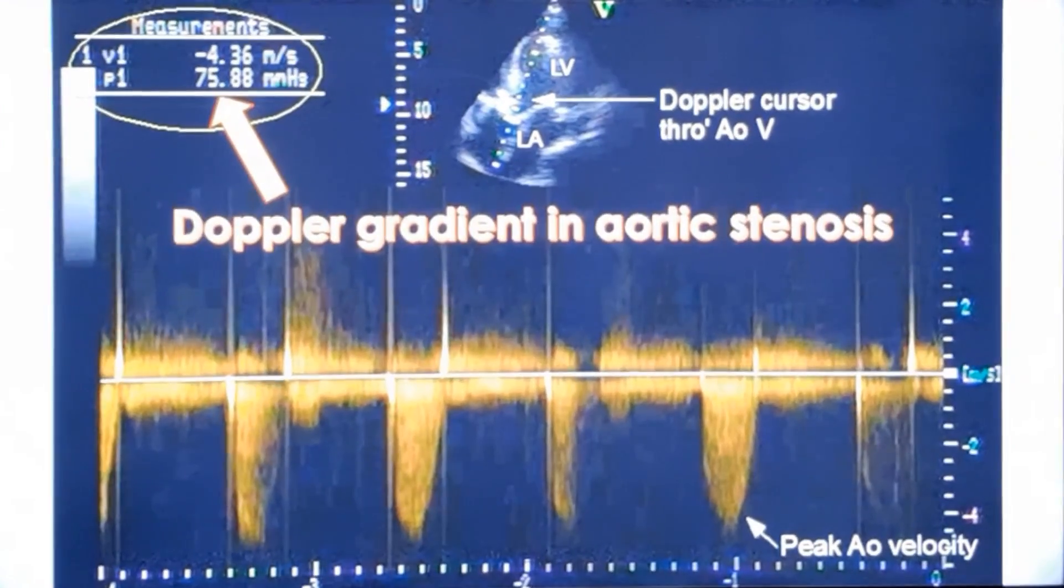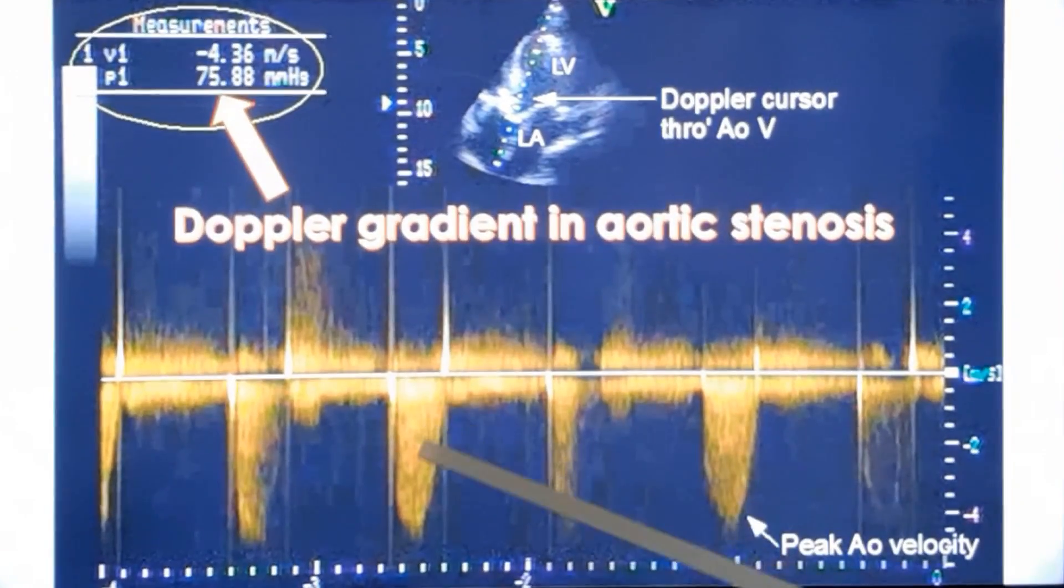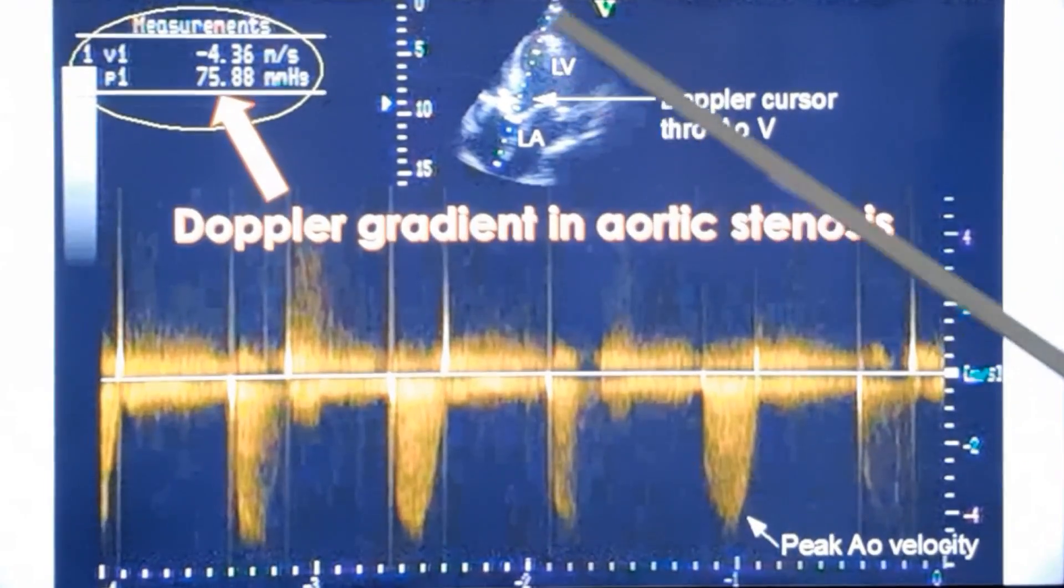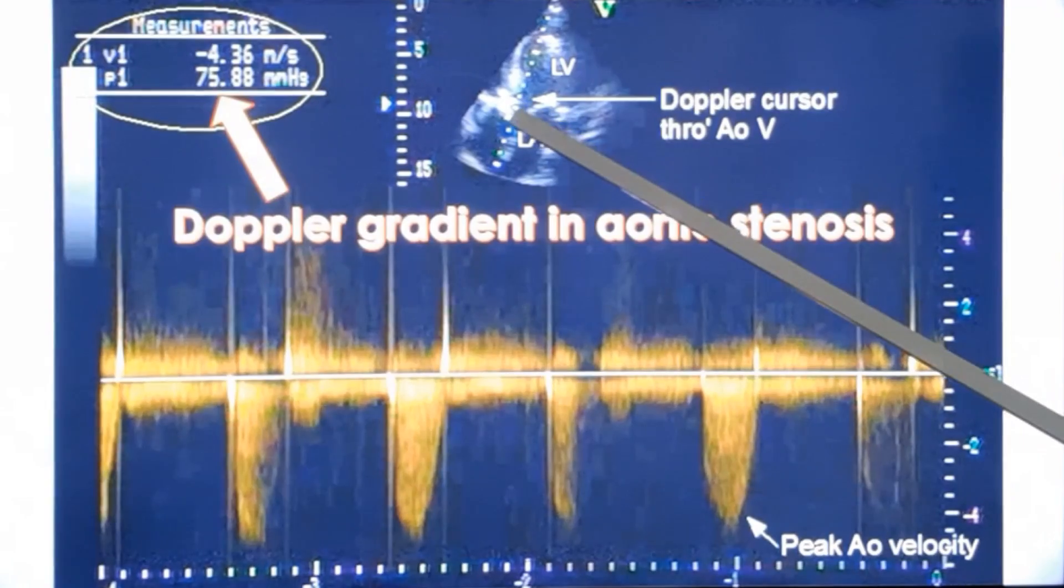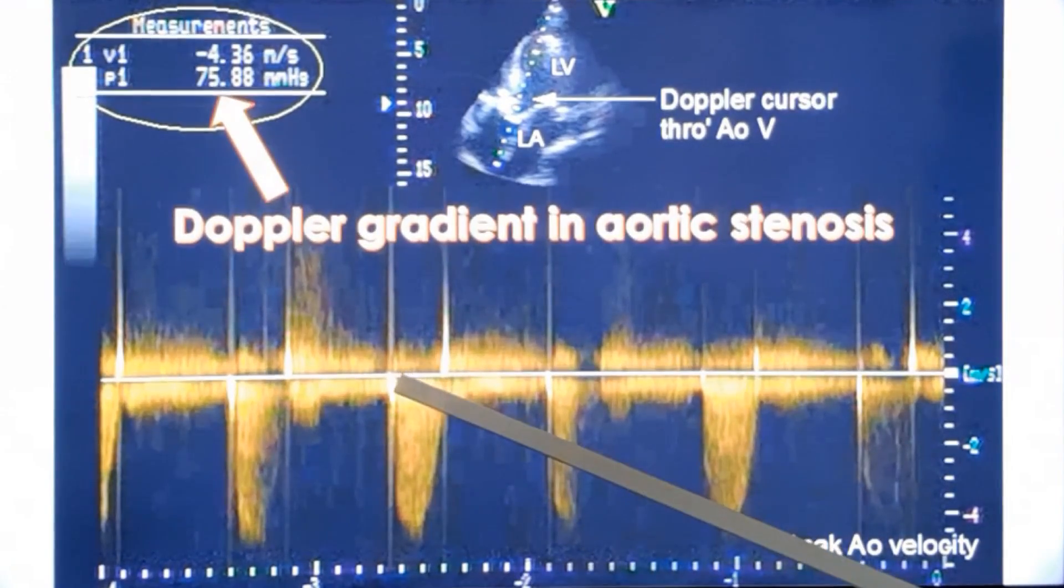This is how gradient is measured in Doppler echocardiography. You can see the aortic tracing taken by continuous wave from the region of the aortic valve, and the peak gradient can be measured. In this case, if you want to take the mean gradient, you should sketch out the outline and then the computer will give you the mean gradient. Here it has not been shown.